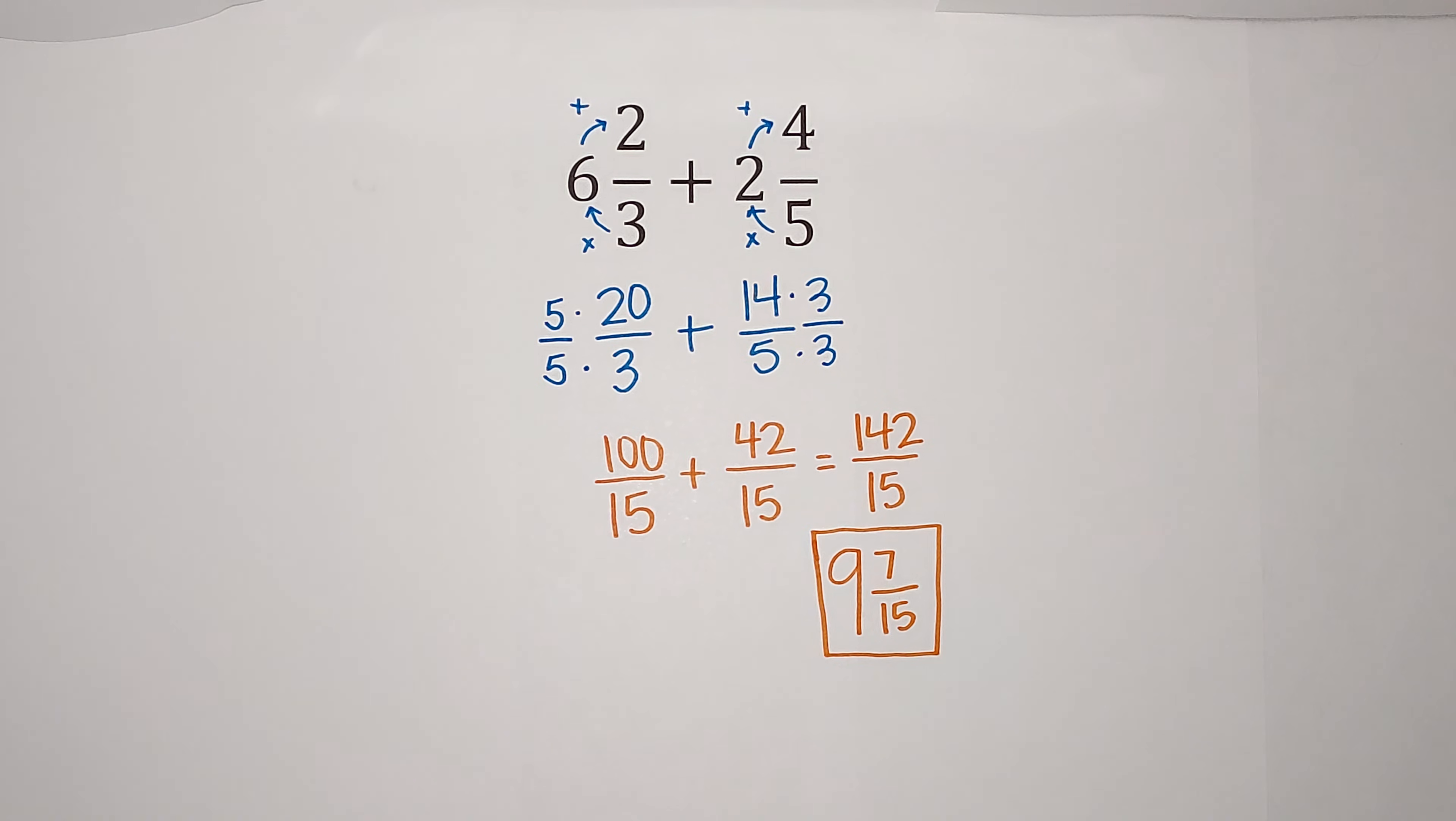So 6 2/3 plus 2 4/5 gives me 9 7/15. All right, that was fun. Hopefully you can get your work done if you have any and hopefully that makes sense. Bye.